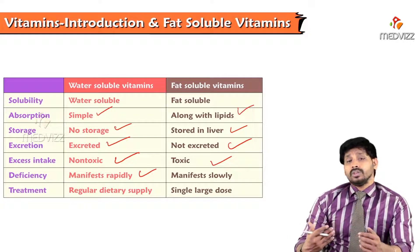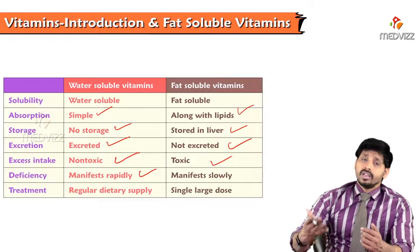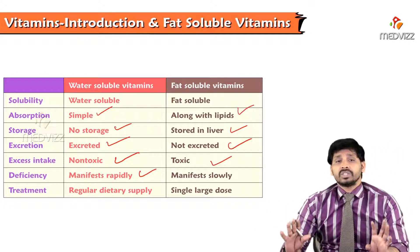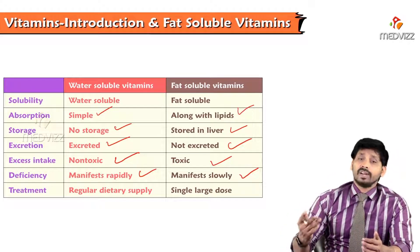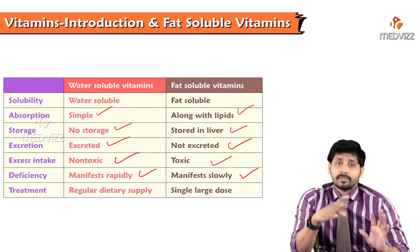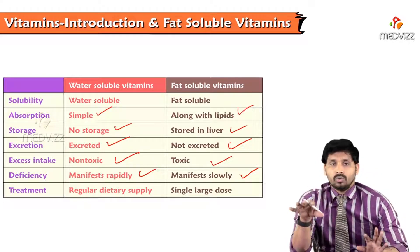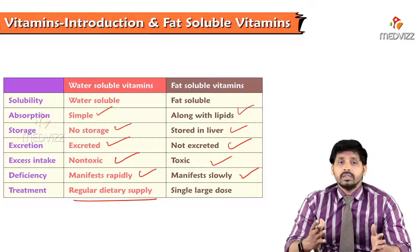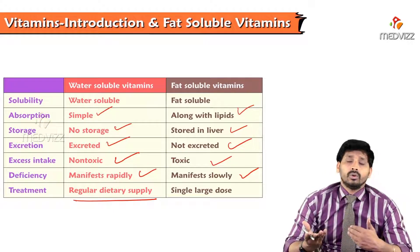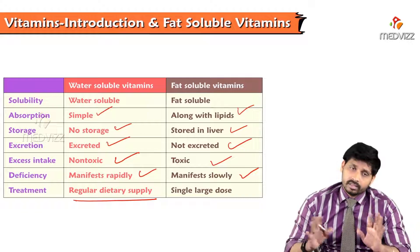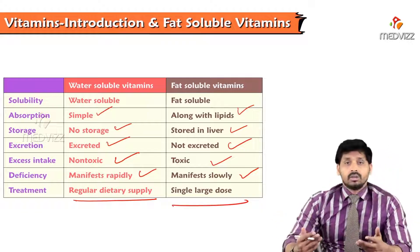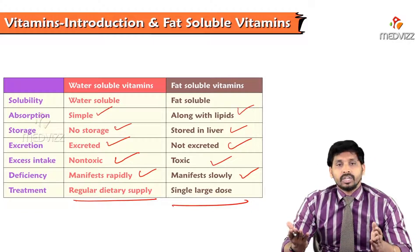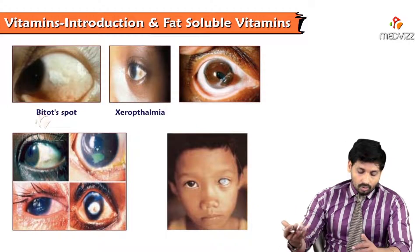Regarding deficiency: water-soluble vitamins need to be taken daily — if you stop, deficiency symptoms appear within one or two days. For fat-soluble vitamins, since they are stored in the liver, their deficiency manifestations are slow. For treatment: water-soluble deficiencies are corrected with regular dietary supply, while a single large dose of fat-soluble vitamins can serve for one to six months.